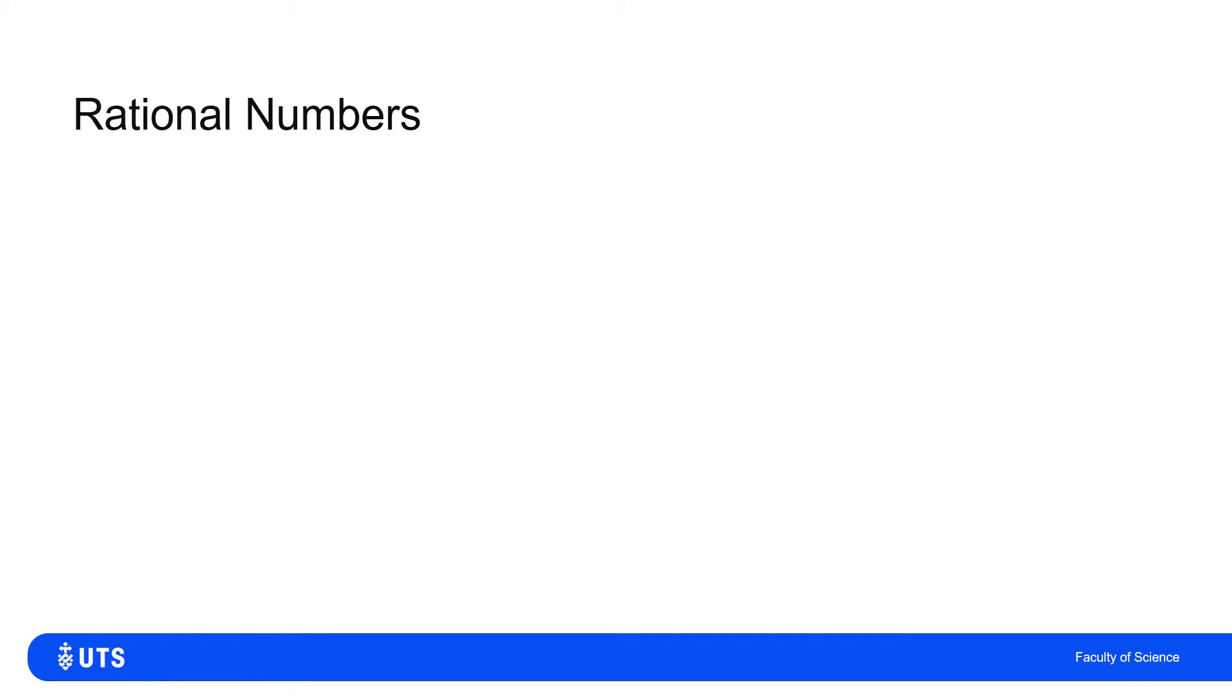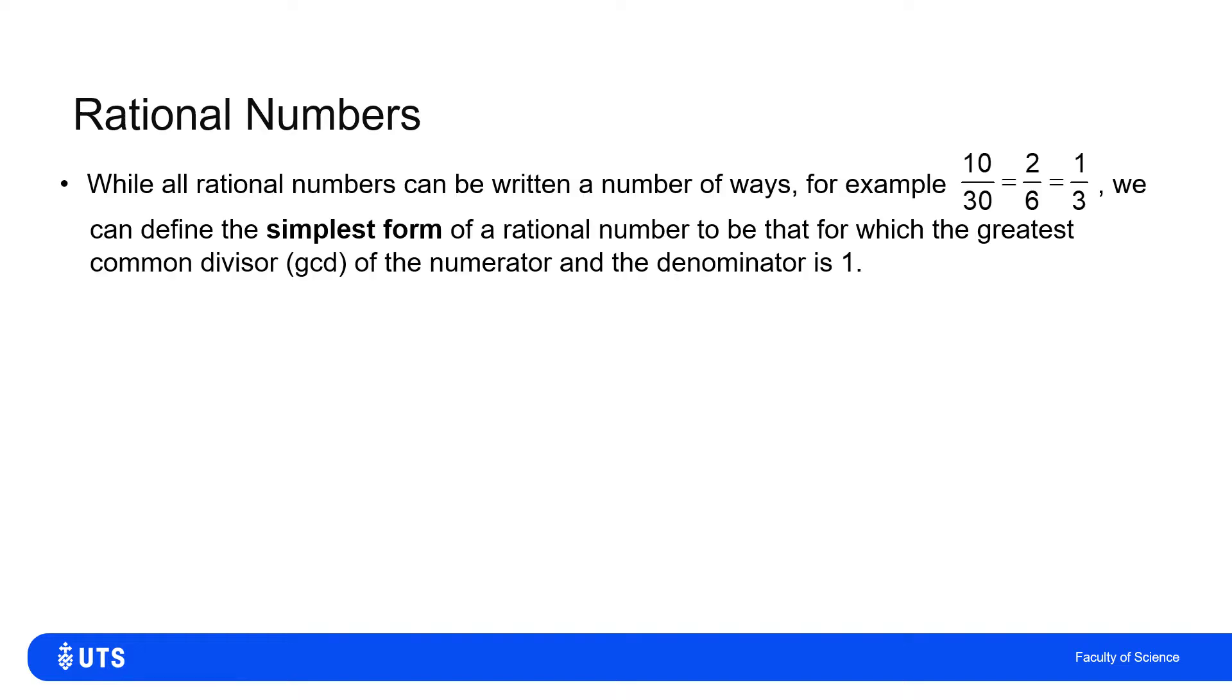Before we go into the final proof for this section, we just need one further definition when it comes to rational numbers. Now, a rational number is just one that can be written as an integer divided by an integer. But there is no unique way of doing that. That 10 thirtieths is the same as two sixths. Two sixths is the same as one third. Similarly, it's a hundred three hundredths.